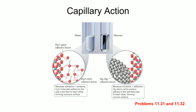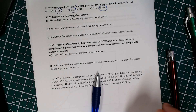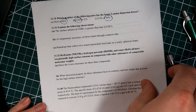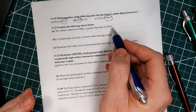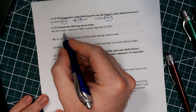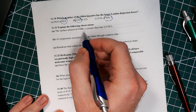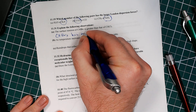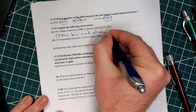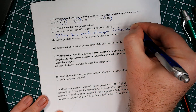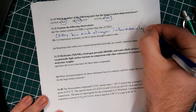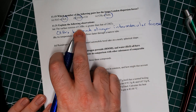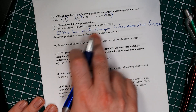Now let's look at problems 31 and 32. First: the surface tension of CHBr3 is greater than that of CHCl3. The reason for that is that CHBr3 has much stronger intermolecular forces. CHBr3 is larger, so it has greater London dispersion forces and therefore stronger intermolecular forces overall.